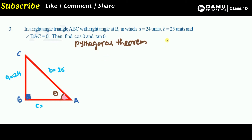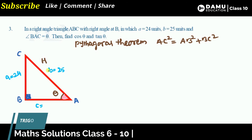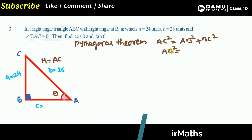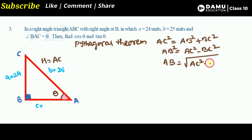By the Pythagorean theorem, AC² = AB² + BC², where AC is the hypotenuse. Rearranging, AB² = AC² − BC², so AB = √(AC² − BC²).